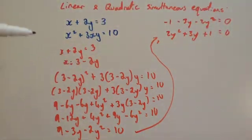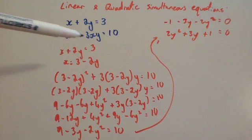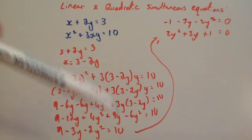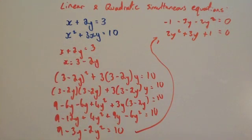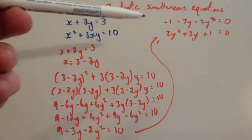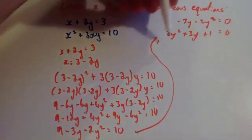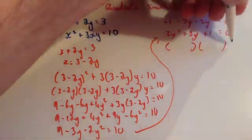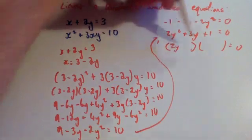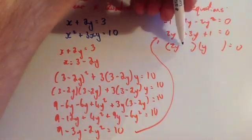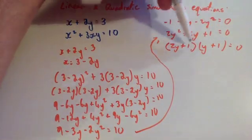So we've substituted x equals 3 minus 2y into the quadratic and expanded and simplified — you'll always need to do that. Now factorizing 2y squared plus 3y plus 1 equals 0: because you've got 2y squared, you're going to have 2y and y; and with plus 1, it's going to be plus 1 and plus 1, which gives the 3y in the middle.